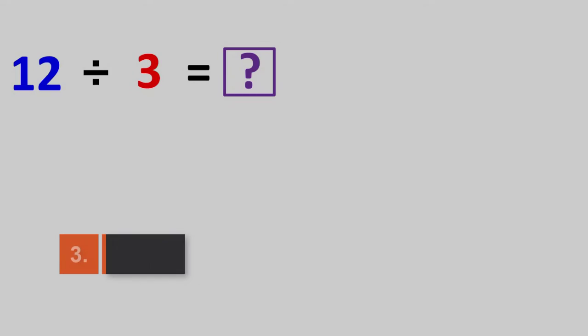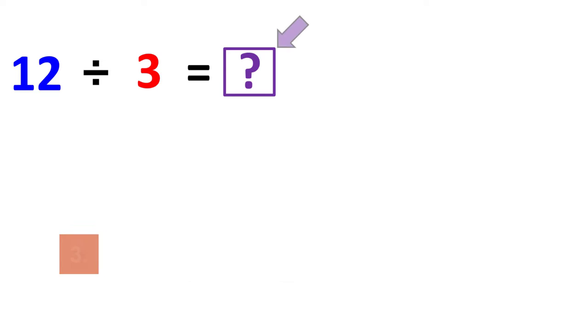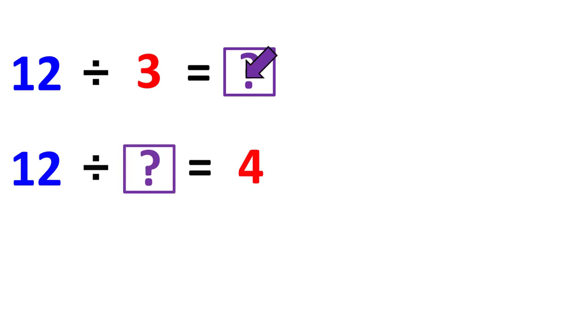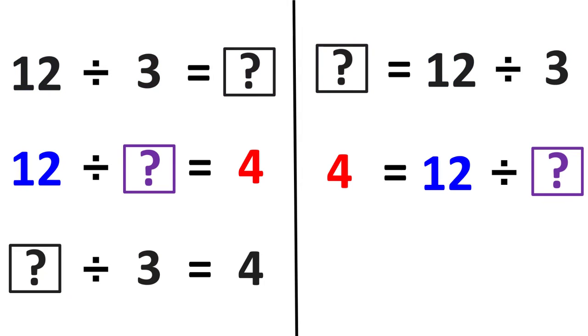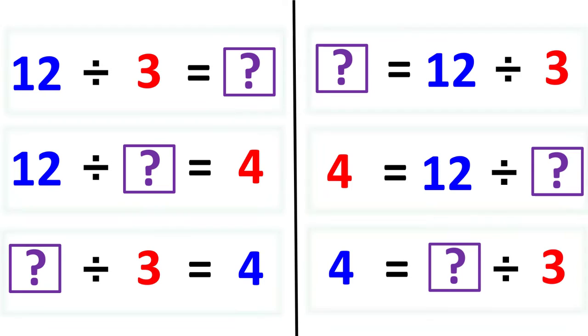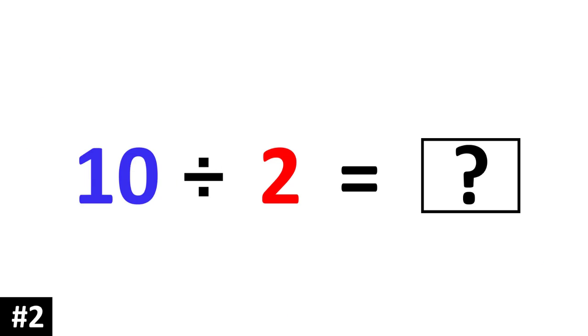We're also all about ensuring students are prepared for every step of every scenario. For instance, let's say students are learning the relationship between division and multiplication. First, we recognize there are six possible ways in which this problem can be presented. So when creating a video, we ensure to incorporate a distribution of each to ensure that students are fully prepared for each scenario.